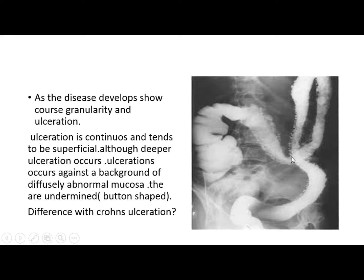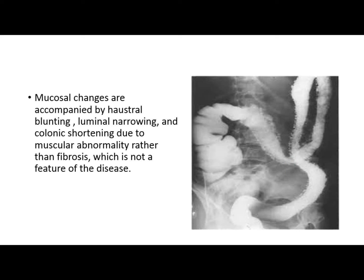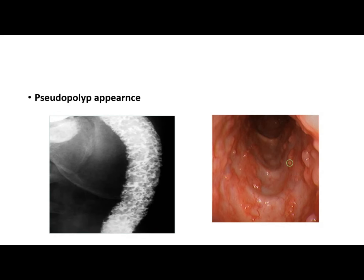The ulcers are always superficial and continuous. In long-standing disease there are additional features like shortening and narrowing of the colon due to hypertrophy of the muscular layer — this is different from Crohn's disease where narrowing is due to fibrosis. There is also luminal narrowing and pseudopolyps, which are the remaining small mucosal islands between the ulcerated areas, as also visible on endoscopy.